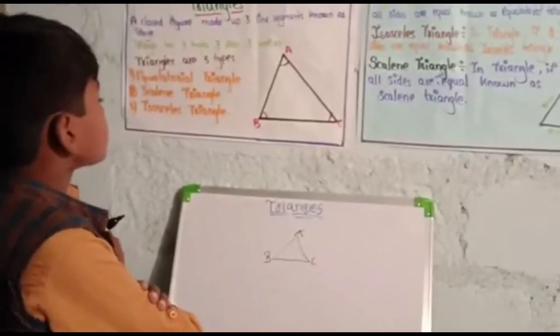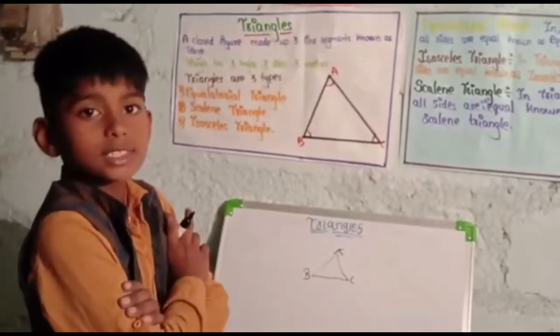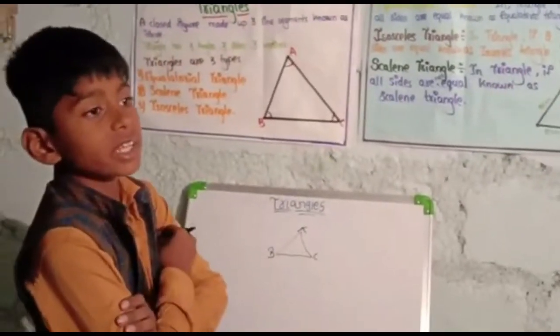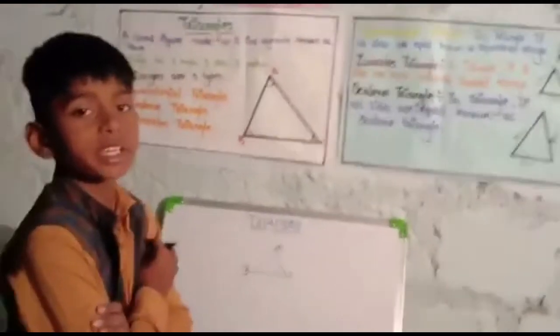A triangle has angles, three sides, three vertices. Triangle has three angles, three sides, three vertices.